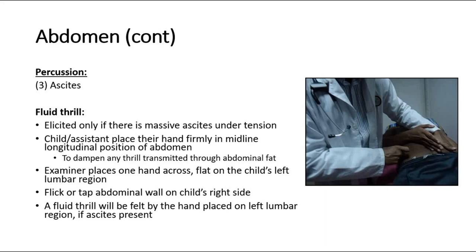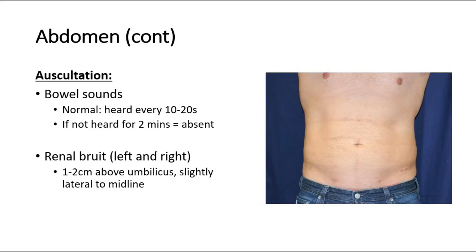After percussion, proceed to auscultation. There are three points to auscultate. The first is for bowel sounds — normal bowel sound is heard every 10 to 20 seconds, and it is considered absent if not heard for two minutes. Bowel sounds can be auscultated at any point near the umbilical region, below the umbilicus. The other two points are to auscultate for the left and right renal bruits, at a site 1 to 2 cm above the umbilicus, slightly lateral to the midline.